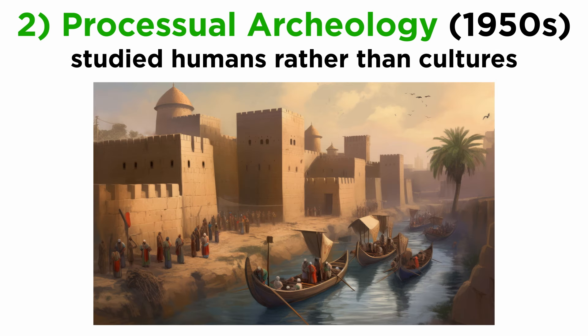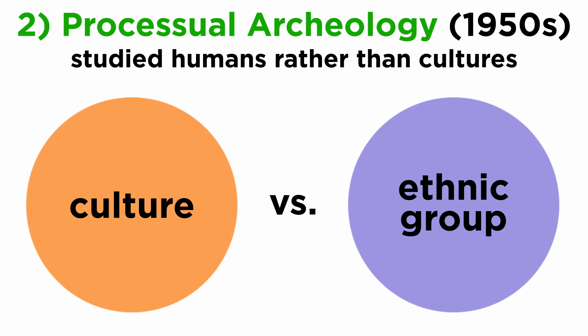Processual archaeology also attempted to refocus archaeology to studying humans, rather than the study of cultures defined by archaeologists themselves. This included decoupling the idea of a culture and ethnic group. It became clear that just because archaeologists thought two groups had similar material remains, they didn't act as the same ethnic group or political organization, as had been previously envisioned.